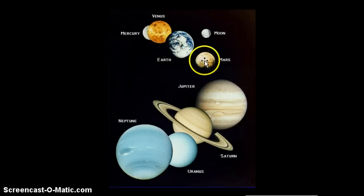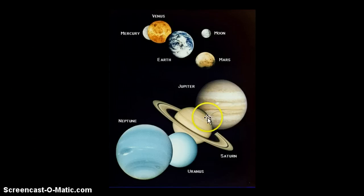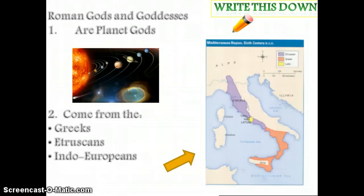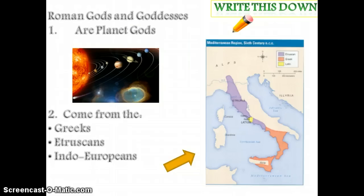Mercury, Venus, Mars, Jupiter, Saturn, Neptune — all are Roman gods. Now you need to start writing on your note sheet. Write down that the Roman gods and goddesses are planet gods, and that the Romans got their gods mostly from the Greeks. They also got some from the Etruscans, the people who lived in Italy before the Romans, and from some Indo-European cultures — those people from Central Asia and Europe.